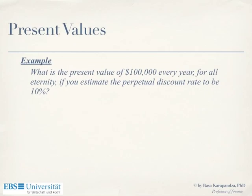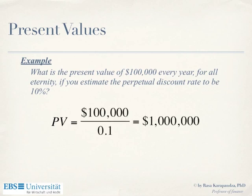Example: what is the present value of $100,000 every year for eternity, with the first payment in one year from now and interest rate of 10%? PV = C/R = 100,000/0.10 = $1,000,000. If you put one million in a bank at 10% interest, you receive every year forever $100,000 — as long as you take the $100,000 and spend it without compounding.